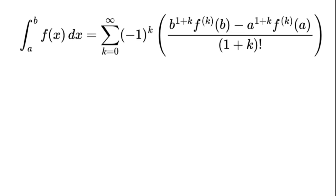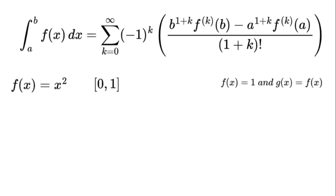This comes from our main formula by setting f(x) equals 1 and g(x) equals f(x), and the constants from the antiderivatives cancel out. Let's try it with f(x) equals x squared on the interval [0, 1]. Derivatives: f(x) equals x squared, f prime(x) equals 2x, f double prime(x) equals 2, and f to the power of k of x equals 0 for k greater than or equal to 3.